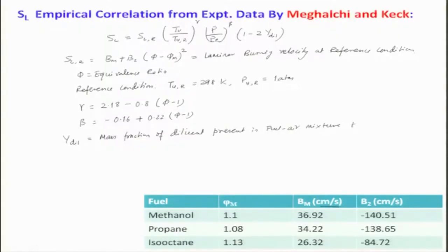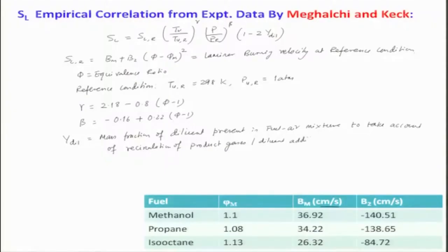The diluent term accounts for recirculation of product gases or addition of diluent. For example, if I am trying to extinguish a flame and look at how burning velocity decreases, I will have to account for this. In gas turbine engines there will be a lot of recirculation of products. Similarly, in internal combustion engines, exhaust gas recirculation is used today as a methodology of decreasing the emission level, particularly NOx. So there may be some use in application as well.